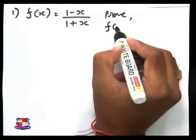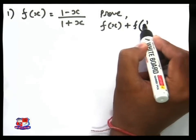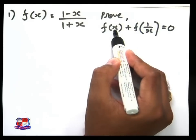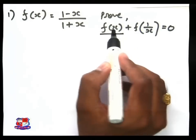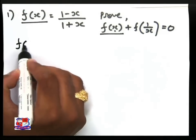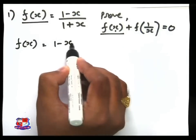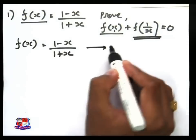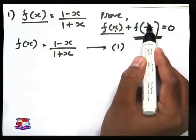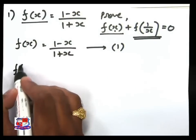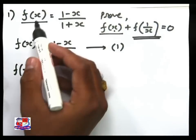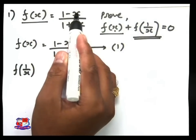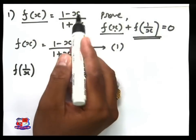We want to prove f of x plus f of 1 by x is equal to 0. First, put x as it is: f of x is equal to 1 minus x upon 1 plus x — call this equation number 1. Now we want to find f of 1 by x. So whatever value x has, replace it by 1 by x.